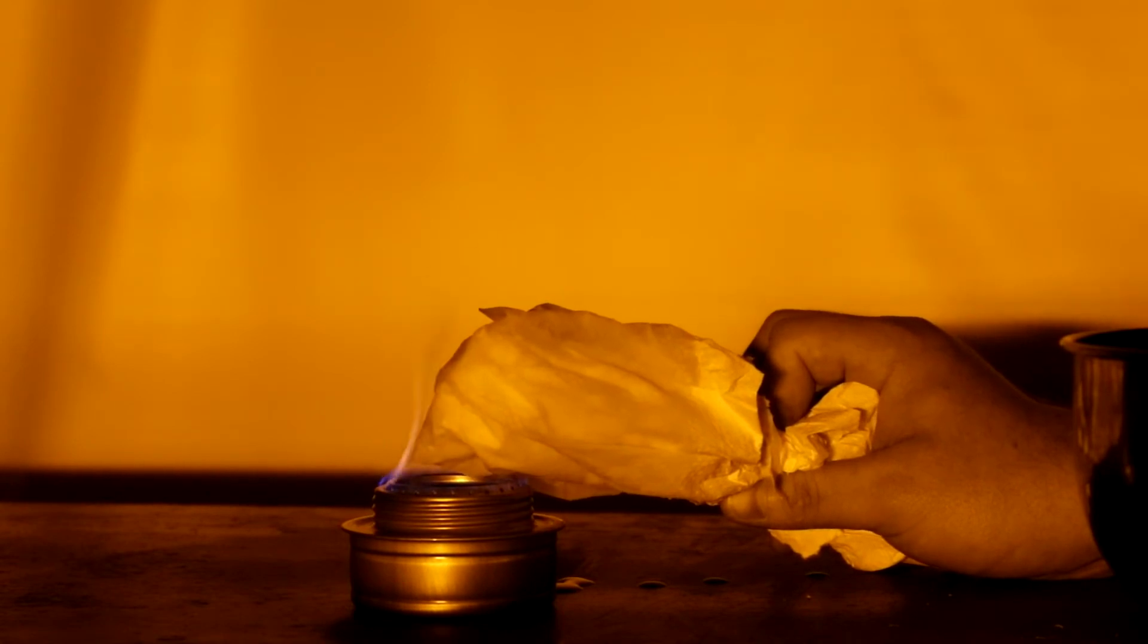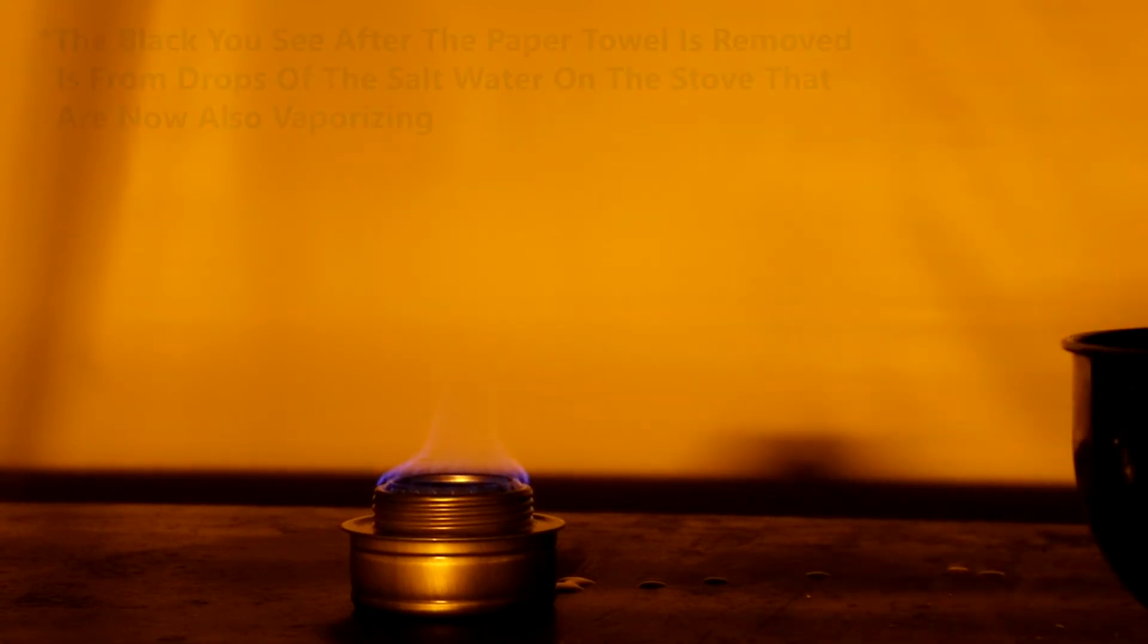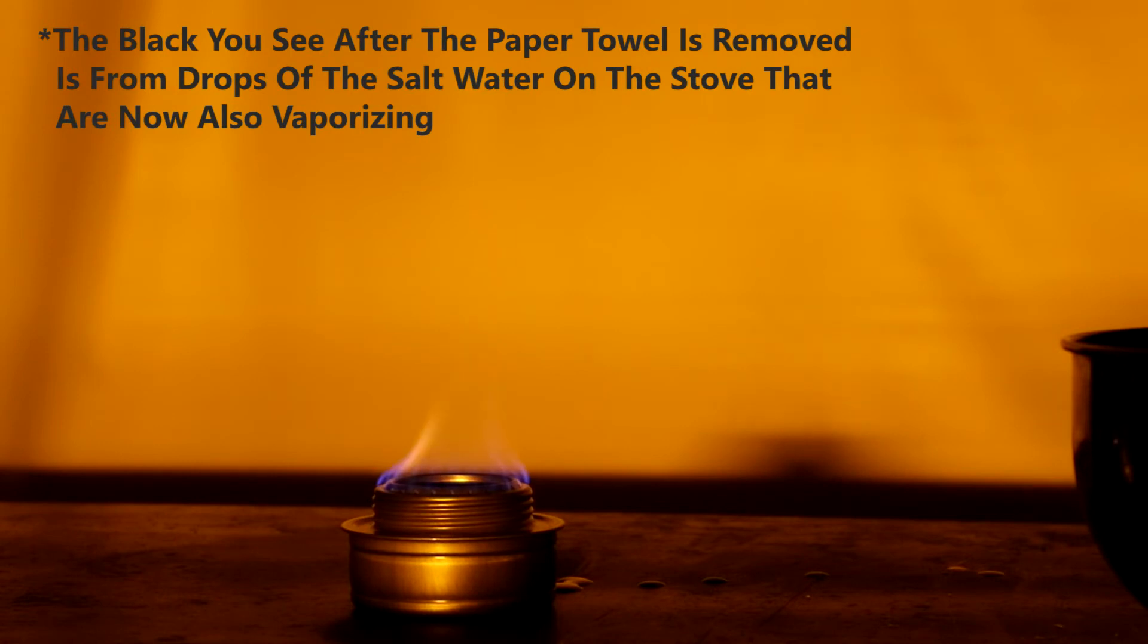But once the paper towel with the salt is put into the flame, you can see a shadow on the backdrop from the flame, and some parts of the fire now appear to be black, absorbing the light.